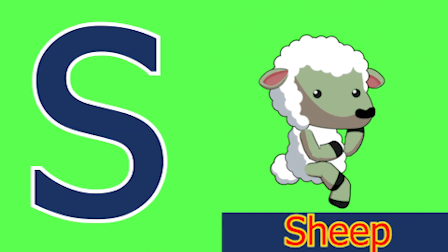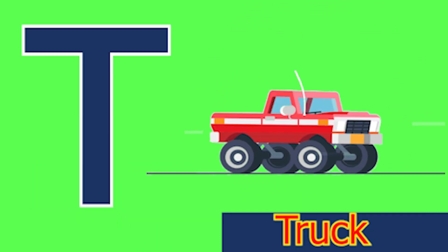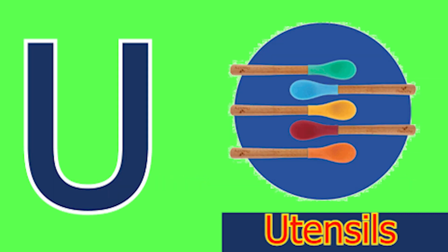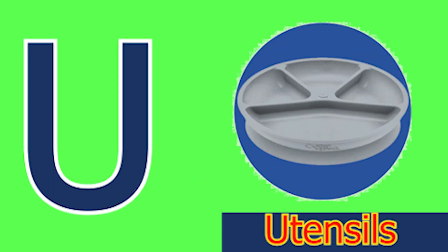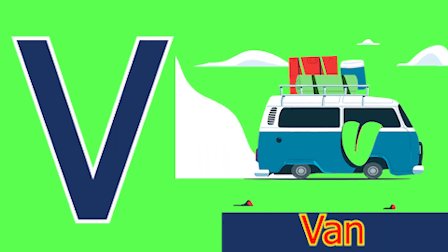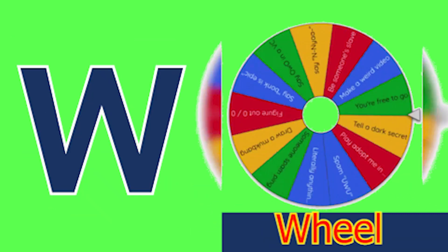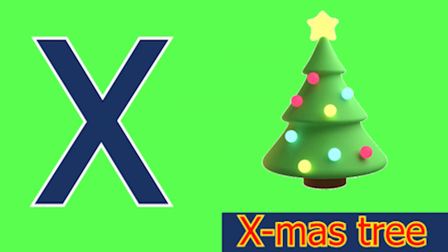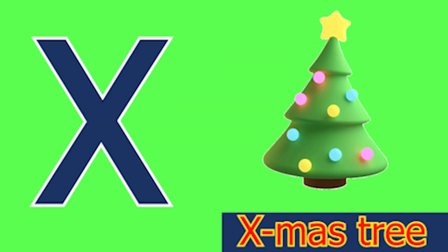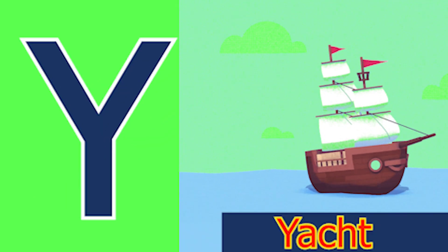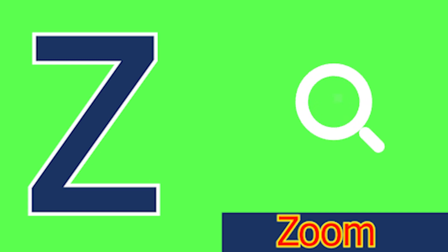S for sheep and T for tub, U for utensil, B for van, W for wheel and X for accessory, Y for yacht and Z for zone.